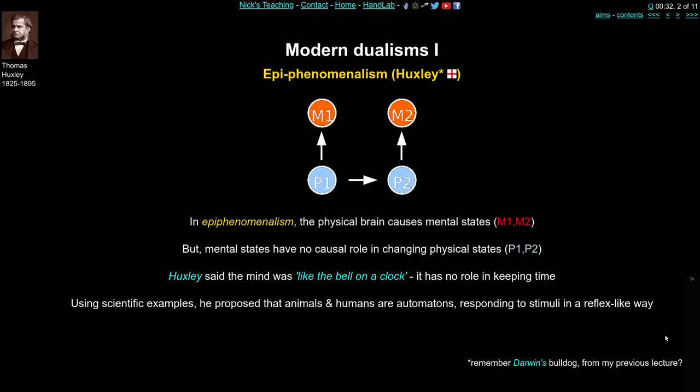Huxley was Darwin's bulldog — very much influenced by evolutionary and biological processes. He thought that animals and humans are actually all automatons, they're robots. Before Darwin it was thought that animals were automatons and only humans really had a mind, a soul, and free will. But Darwin put a stop to all that. Now both animals and humans have to be thought of in the same way, and Huxley's solution was to think that humans were also automatons, just like animals. The feeling we have of controlling our own body is actually an illusion — just an epiphenomenon. The mind is just the froth on the ocean of the waves of the brain.